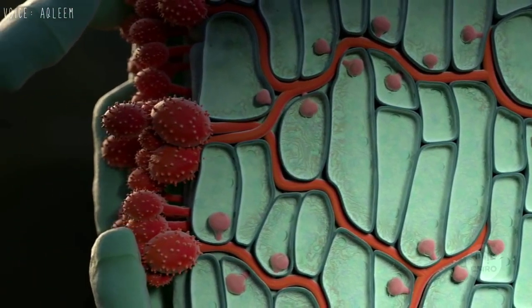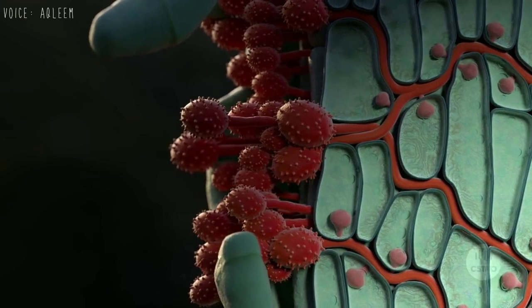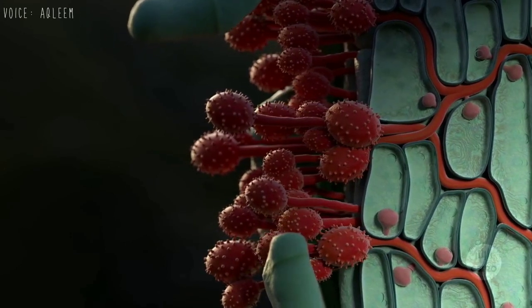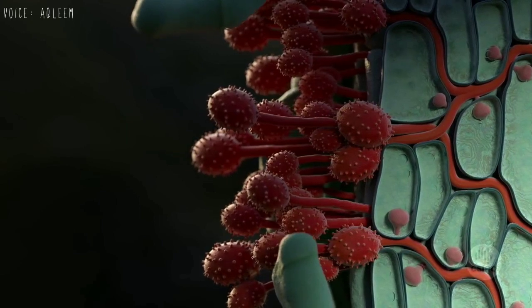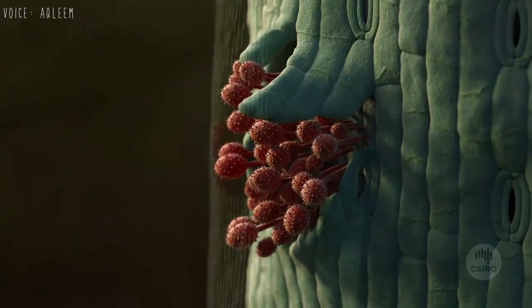The spores erupt from the surface of the plant. The spores spread creating pustules, new sites of infection. Soon the stem and leaf are covered in fungal growth.